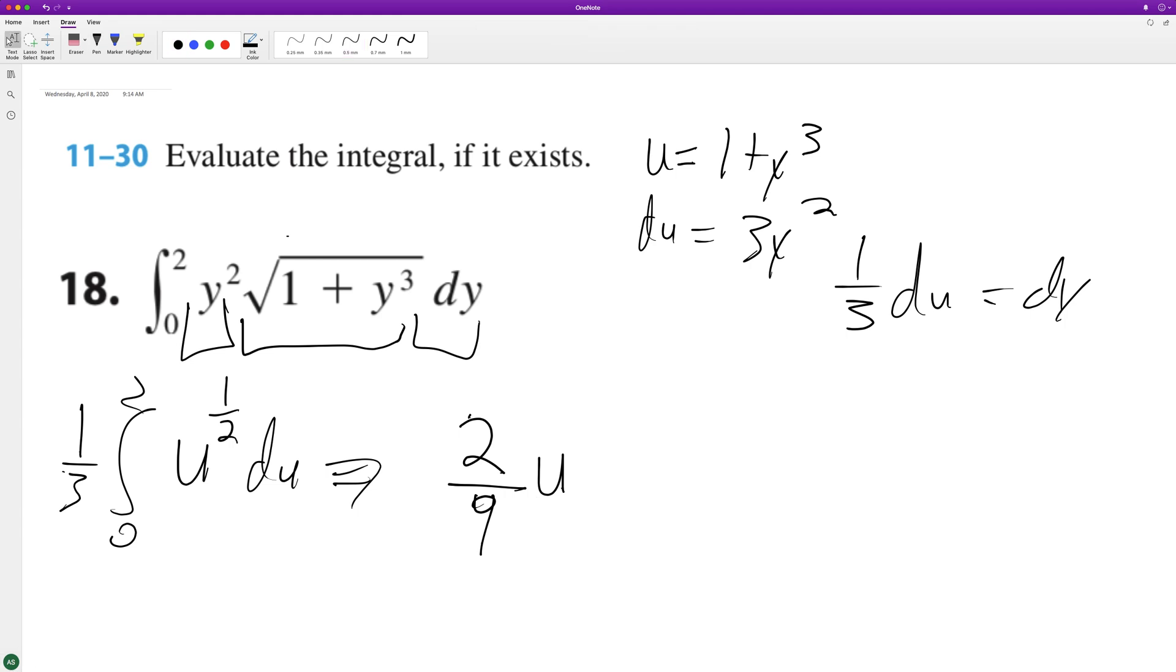one-half - three-halves I mean. So I'm gonna go ahead and substitute back in, so it's u raised to the three-halves. But we'll go ahead and make it equal to 1 plus y cubed raised to the three-halves, and this becomes - not dy - 0 to 2.